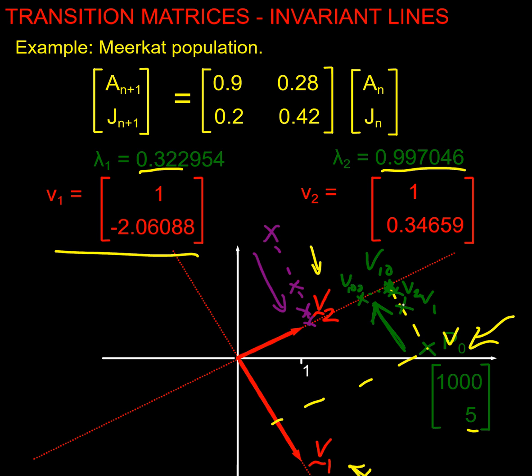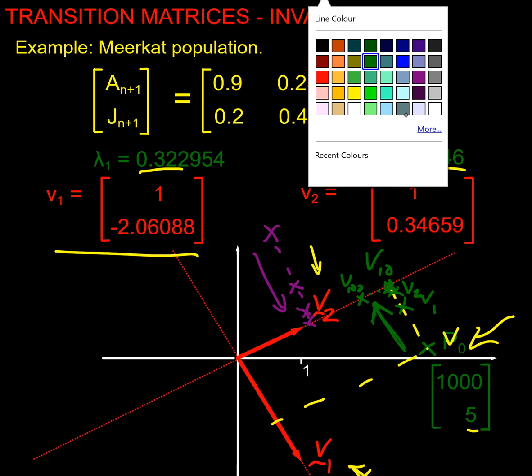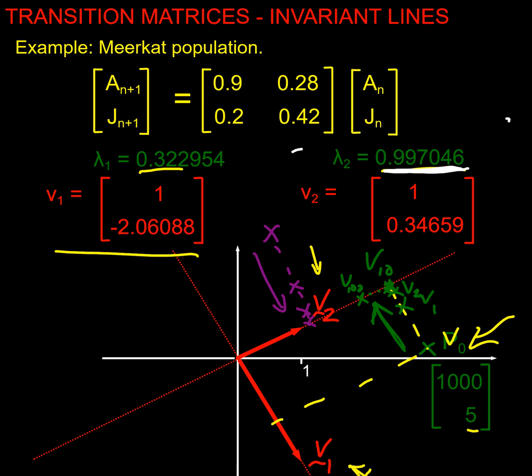What's that telling us? There's a dominant invariant line, and the dominance depends on the multiplier. This has got a large multiplier compared to that, and it's the magnitude not the sign - the magnitude of our lambda decides it. This one's a dominant invariant line and effectively this is like a recessive line, and that one just goes to zero. Over a period of time everything ends up on that line and the ratio of juveniles to adults tends to this ratio.